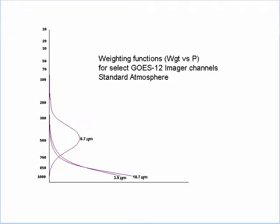First, let's consider the response curves — a plot of pressure versus weight. Looking at the water vapor channel, the 6.7 channel, we can see that it peaks around 500 millibars, meaning we're looking at the mid-levels of the atmosphere primarily. In contrast, the 3.9 and 10.7 channels peak near the surface, so those two channels would actually be detecting low-level moisture most readily. Those are the channels we're going to be most concerned about.